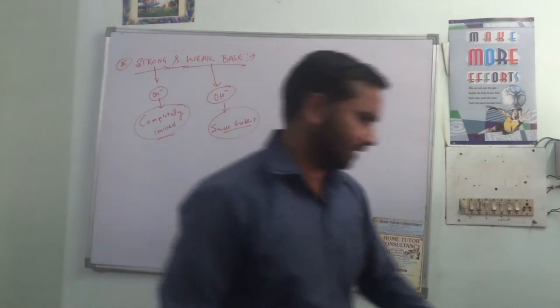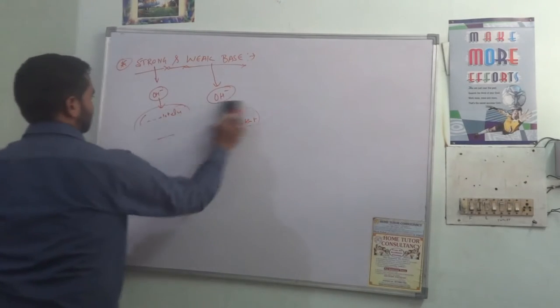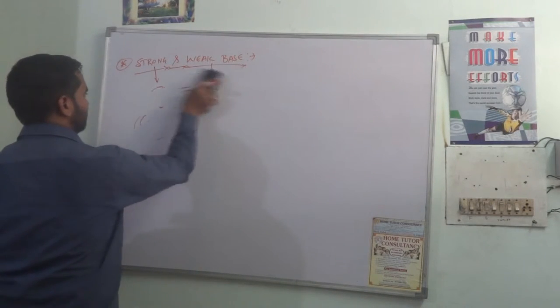For example, if you take strong and weak bases, in strong bases we have sodium hydroxide and potassium hydroxide.